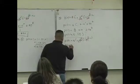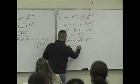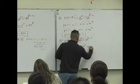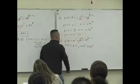P of 2 is 8C2, 0.10 squared, 0.90 to the, what's 8 minus 2? 6 power.